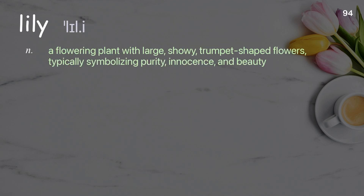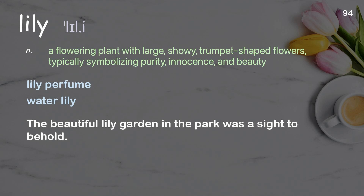Lily: A flowering plant with large, showy, trumpet-shaped flowers, typically symbolizing purity, innocence, and beauty. Examples: Lily perfume, Water lily. The beautiful lily garden in the park was a sight to behold.